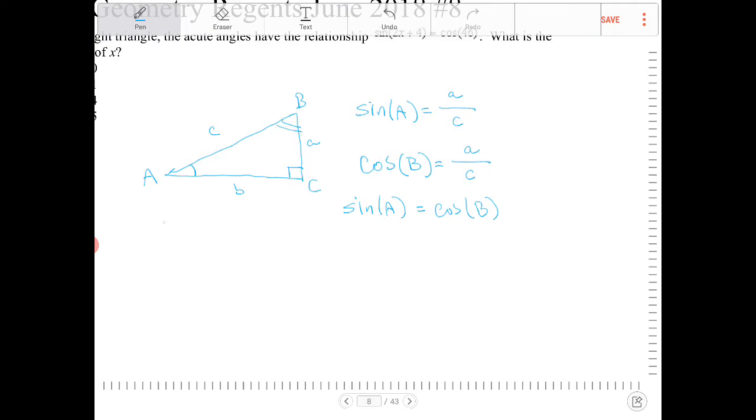The circumstances are this: angle A plus angle B plus 90 should equal 180. That's the sum of all three angles. In other words, A and B together are supposed to be complementary. If I subtract both sides by 90, I end up with A plus B equals 90.